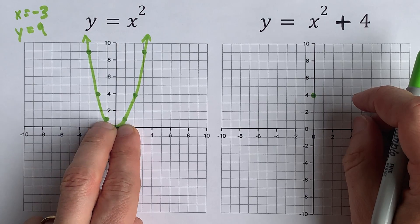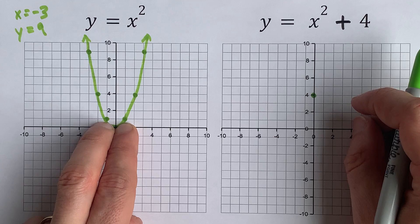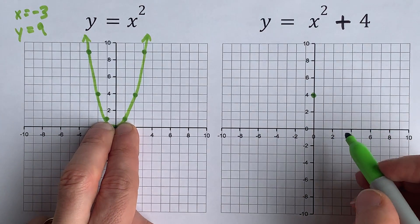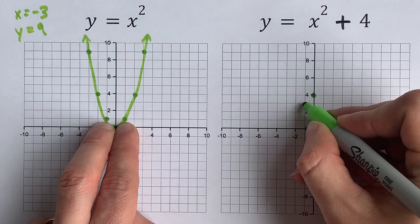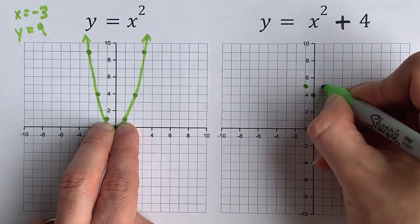These points at x = -1 and x = 1, which were at y = 1, also get shifted up 4 units. So they move up to y = 5.